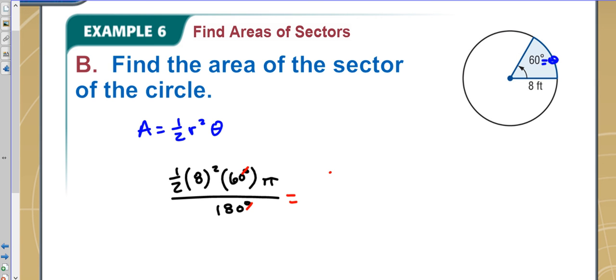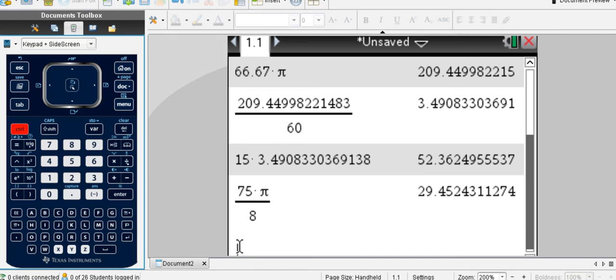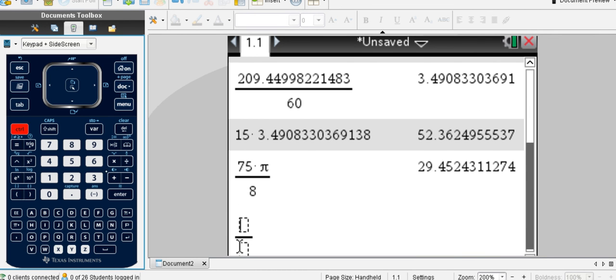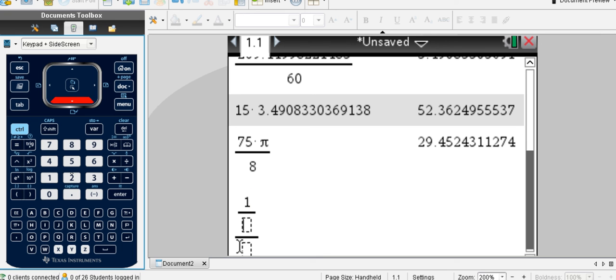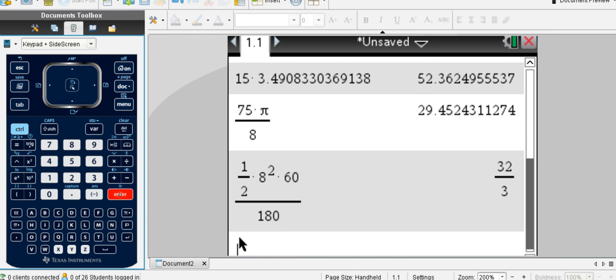So it'll be 32 times 60 pi, all over 180. I think this will be 32 pi over 3. Let's check this out, though, real quick in the calculator just to make sure. I'm going to have a fraction here. So it was one-half, eight squared, times 60, all over 180. I need to put that times in here. That's 32 over 3, yep, and then we throw in the pi.